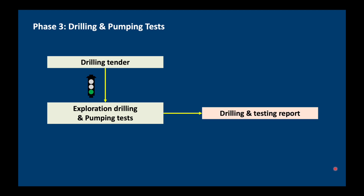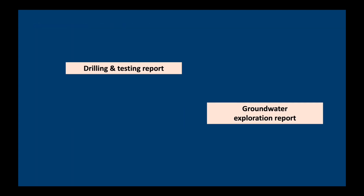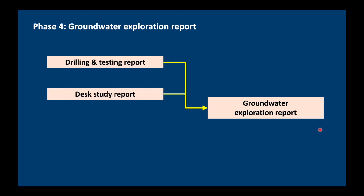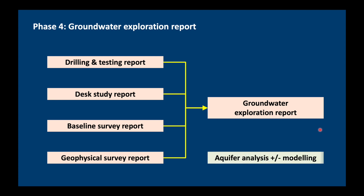The output of the drilling and pumping tests is a report which is usually written by the drilling contractor. The report will contain all the data from the drilling and testing, but the interpretation has to be done by you, the hydrogeologist. That's usually done in what I call a groundwater exploration report. That report will contain not only all the drilling and testing data, but also information from the desk study, the baseline survey, and the geophysical survey report. Finally, you want to do some analysis to look at aquifer sustainability, recharge rates, and so on. Sometimes it is justified to do modeling, but that's only really important if we're designing a wellfield. For most projects, you don't have to do modeling.